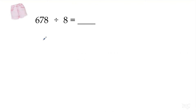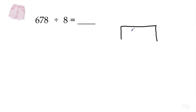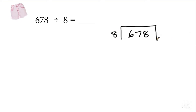All right, so here you can see we're doing 678 divided by 8. The first thing I do when I do my partial quotients, I'm going to put my dividend on the inside, my divisor on the outside, just like my song says, and I'm going to draw my line alongside.